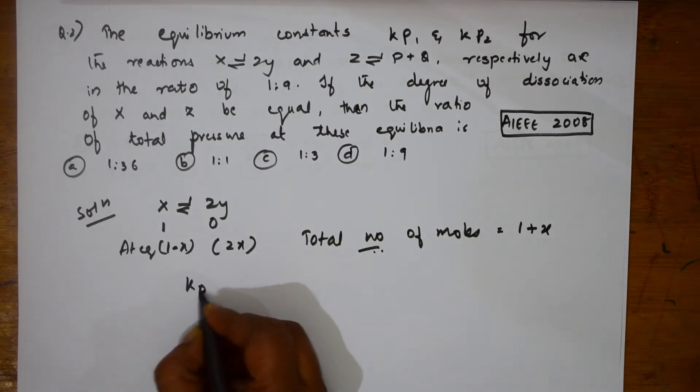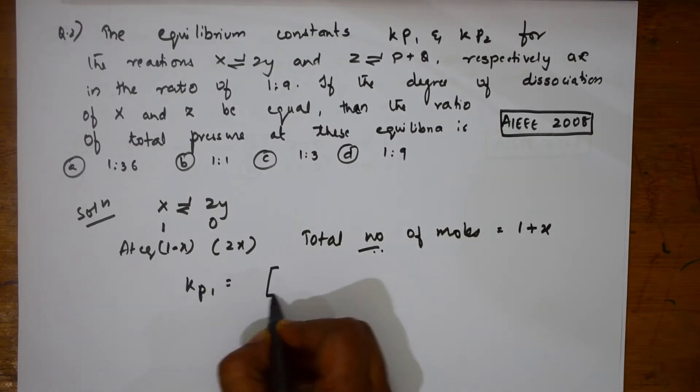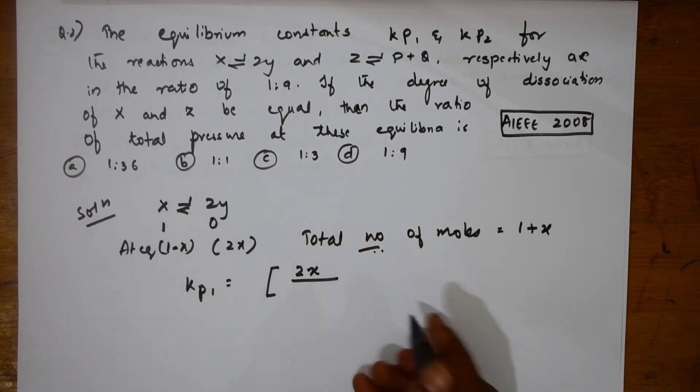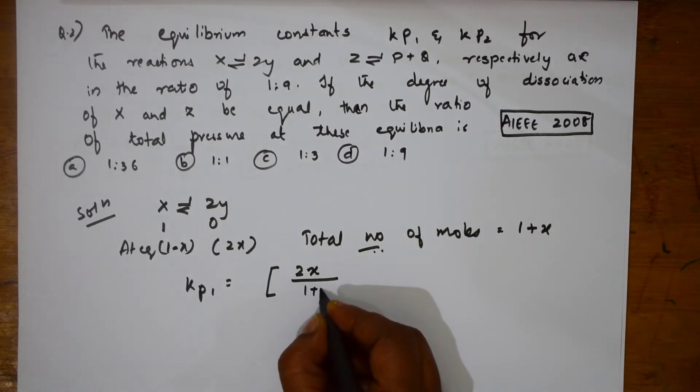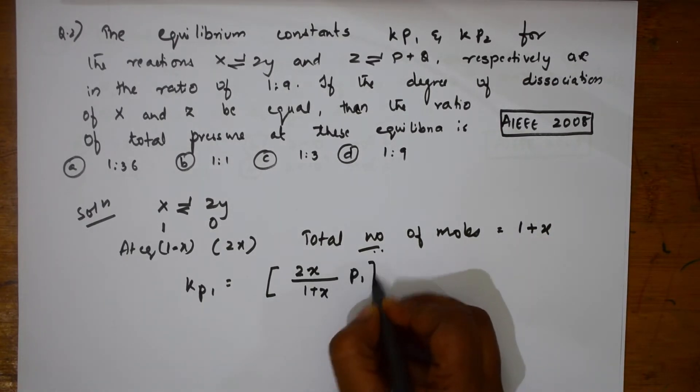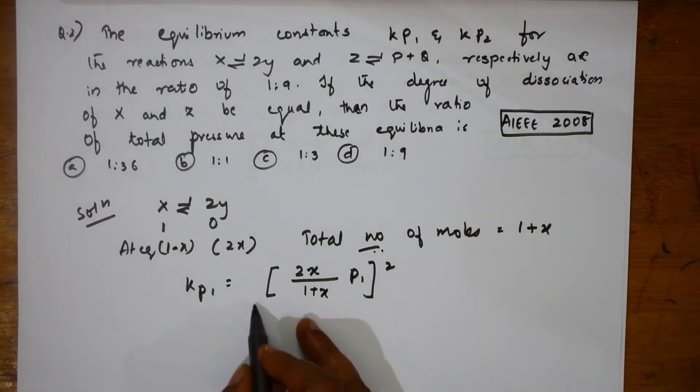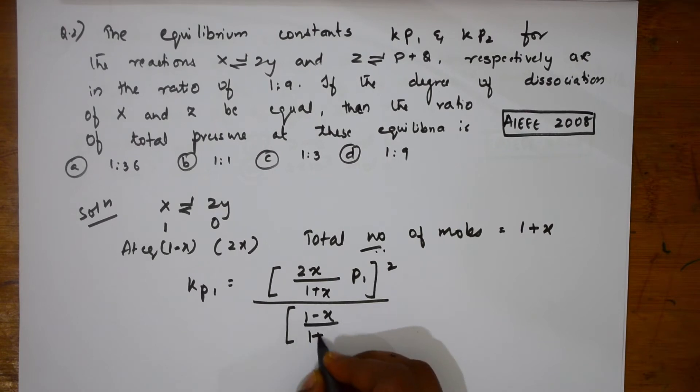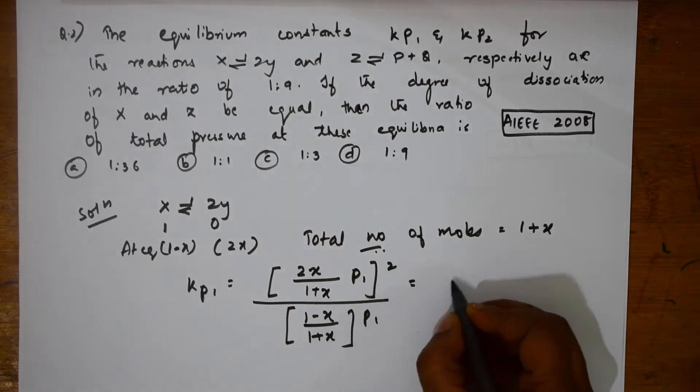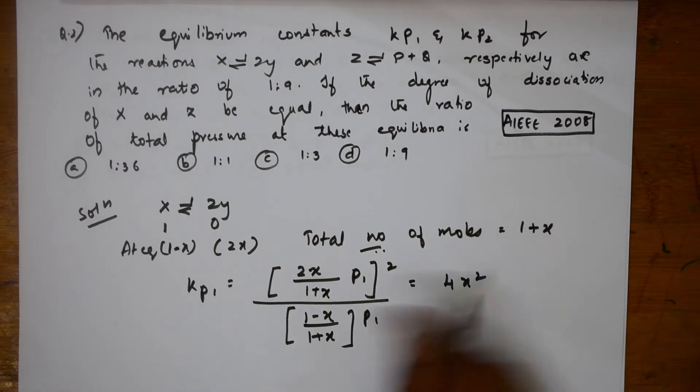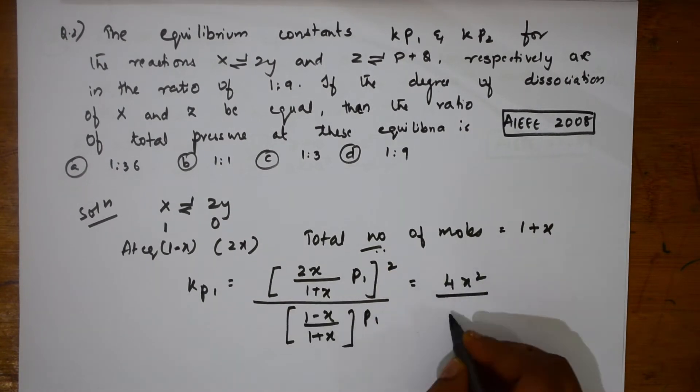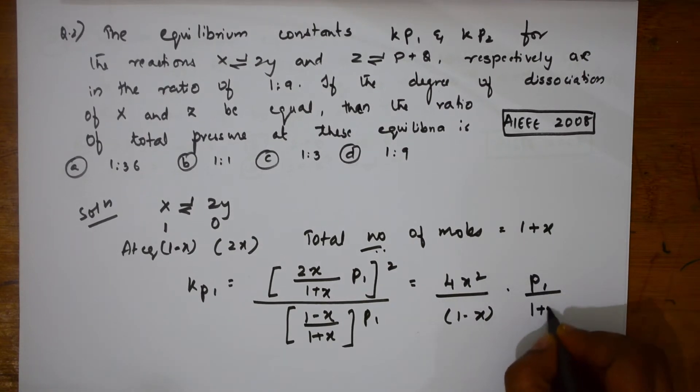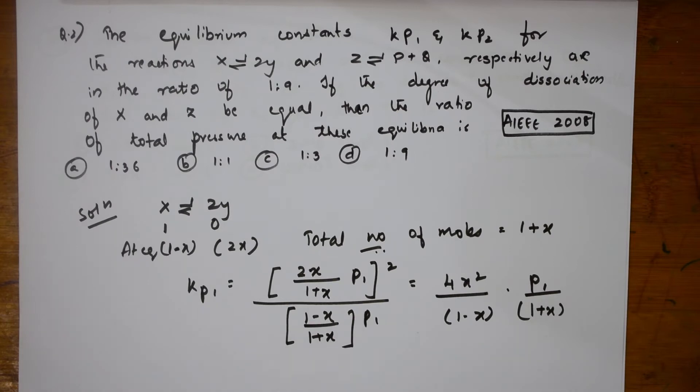Now let us write for Kp1. Kp1 is equal to 2X by 1 plus X, this one, P1. I have written the formula also in the previous video. From that only I have written this, 1 minus X by 1 plus X P1. This comes equal to 4X square by 1 plus X square by 1 minus X into P1 by 1 plus X. This is all for this.